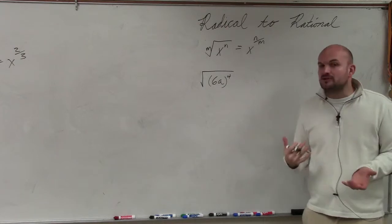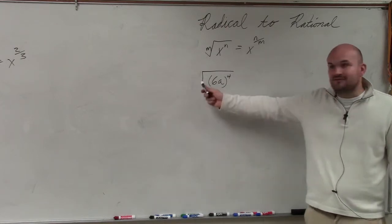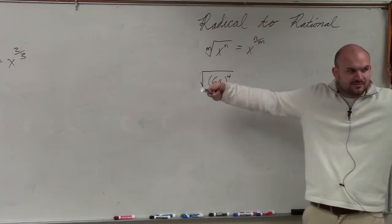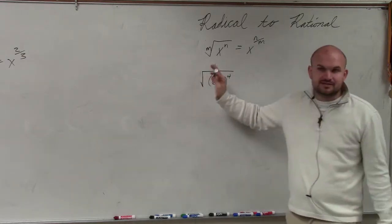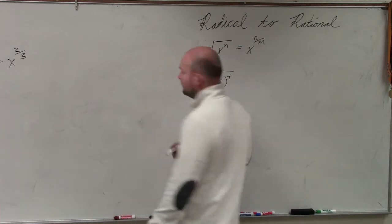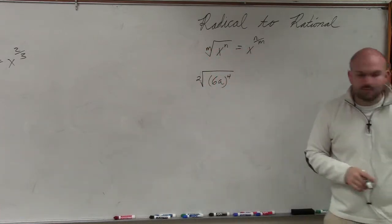And again, sometimes square roots are difficult, because we don't have that 2 written there. If we don't write a 2, if we don't have a number, we understand that's going to be the square root. So just make sure you always include a 2 in there to help you out.